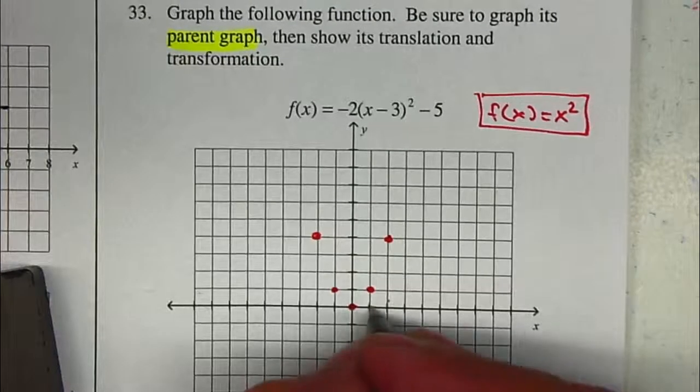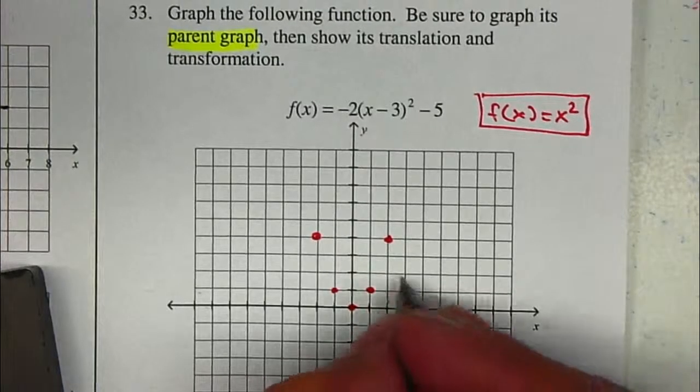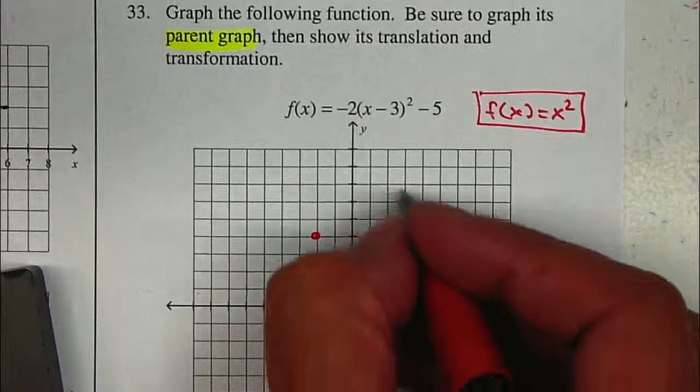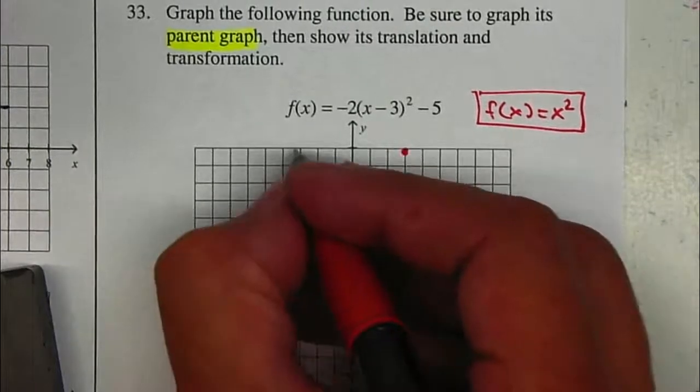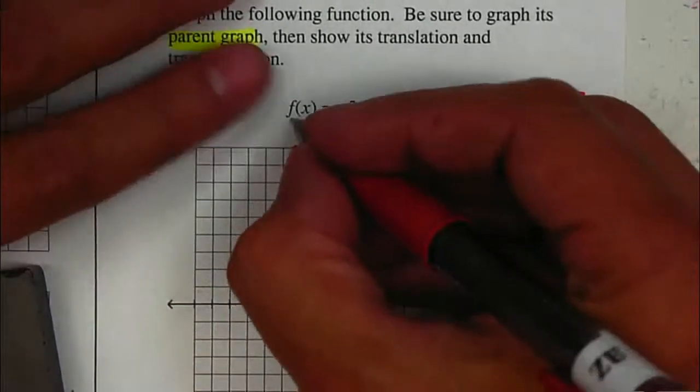If I plug in a 3, 1, 2, 3, it gives me a 9. 2, 4, 6, 8, 9, and then reflected. So this is my parent graph.